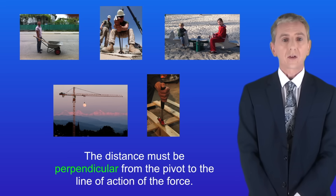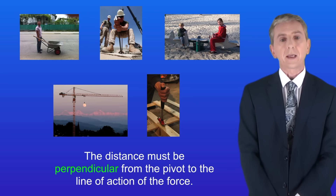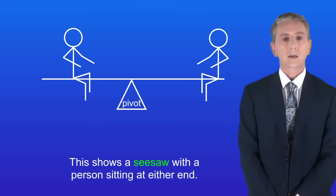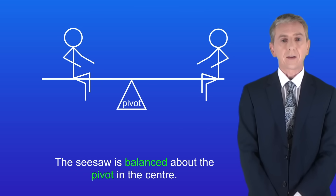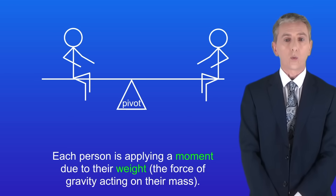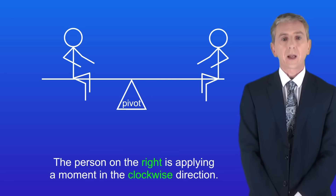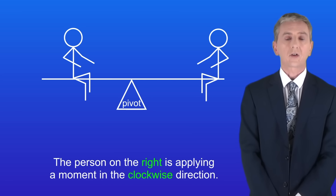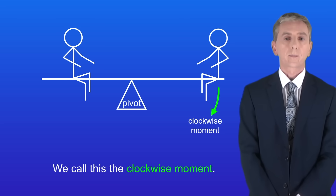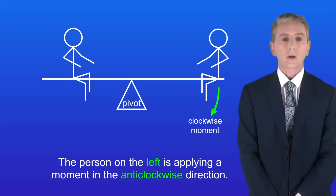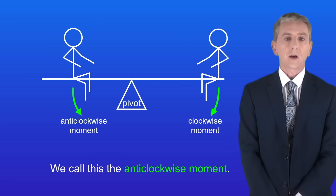This video is all about balanced moments, so let's take a look at what that means. This shows a seesaw with a person sitting at either end. As you can see, the seesaw is balanced about the pivot in the centre. Each person is applying a moment due to their weight — the force of gravity acting on their mass. The person on the right is applying a moment in the clockwise direction, called the clockwise moment. The person on the left is applying a moment in the anti-clockwise direction, called the anti-clockwise moment.